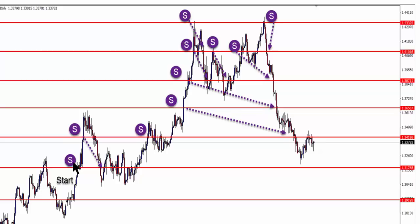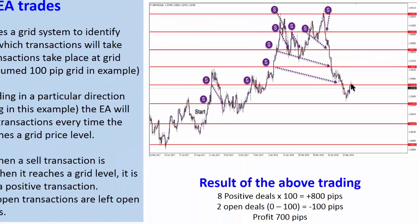At this point we have one open sell transaction at roughly break even and another open sell at minus a hundred pips. If we add up all the cashed-in transactions - one, two, three, four, five, six, seven, eight - we have eight positive deals at a hundred pips each, that's 800 pips. The two open transactions net to minus 100 pips, so the profit over this particular period is 700 pips.